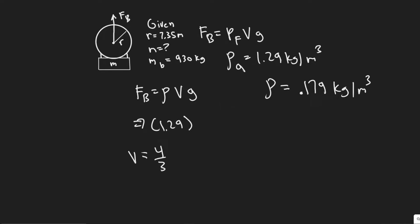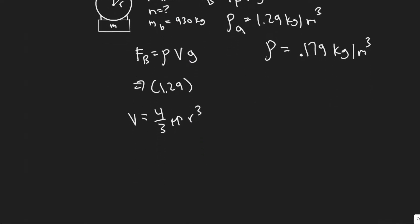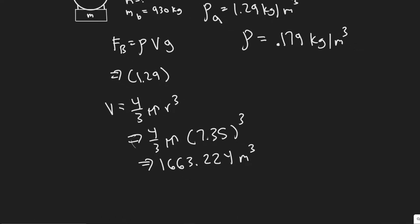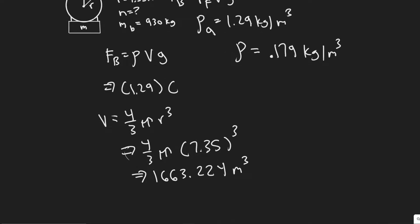The formula for volume is (4/3)πr³. We know the radius of the balloon is 7.35 meters, so it's just a matter of plugging it in: (4/3) times pi times 7.35 cubed. This gives a volume of 1663.224 cubic meters.